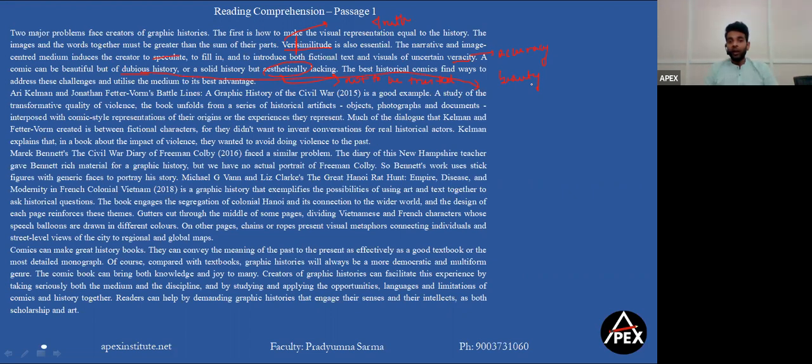So these objects, photographs, documents, all of these are represented in a comic style so that we can experience what they actually represent. Much of the dialogue that Kelman and Fetter Worm created is between fictional characters. They use fictional characters, they did not use real characters. That means because they did not want to invent conversations of real historical actors, they did not want to create any new conversations that did not happen or might not be actually true. Kelman explains that in the book about the impact of violence, they wanted to avoid doing violence to their past. That means they did not want to drastically change the past.